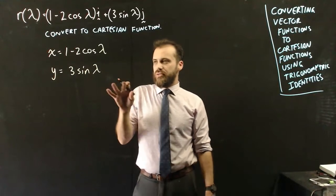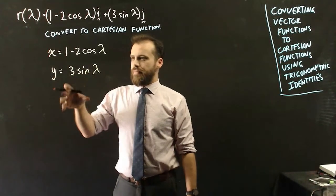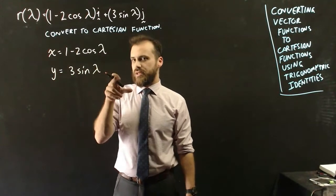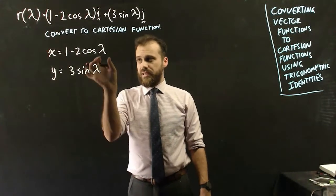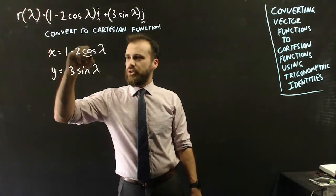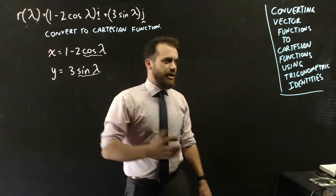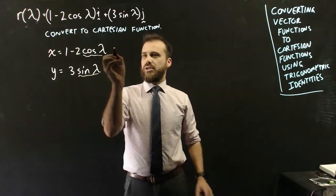Now this problem here is that these are not easily reversible, not easy to make lambda the subject in either of these. But we can do it in a slightly different way. Instead of making lambda the subject, let's make cos lambda the subject and let's make sin lambda the subject, and then we'll be able to use trig identities to combine them in some way. So let's call this equation